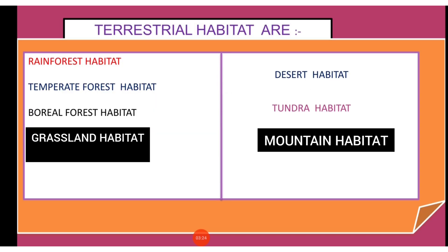Other terrestrial habitats include rainforest, temperate forest, boreal forest, grassland, desert, tundra, mountain, etc.